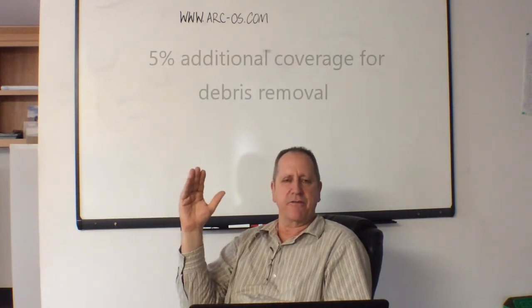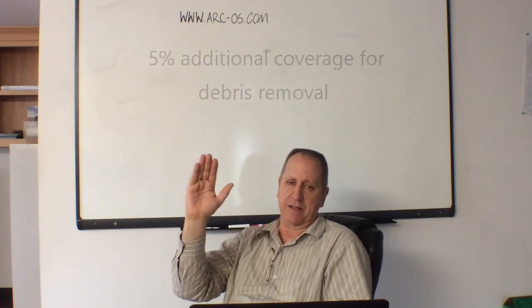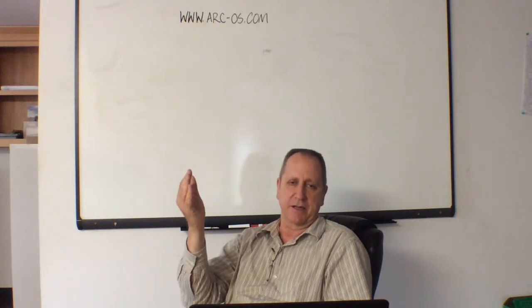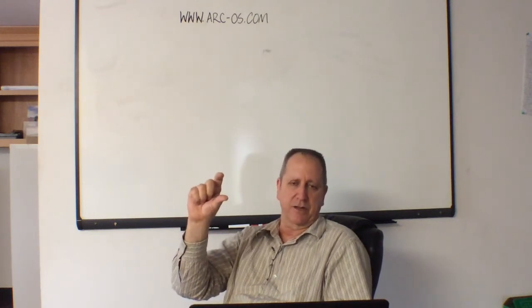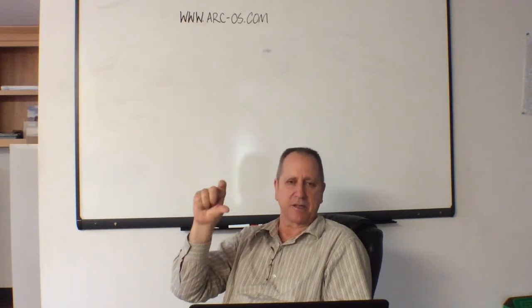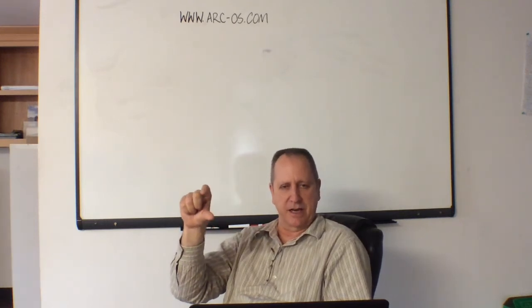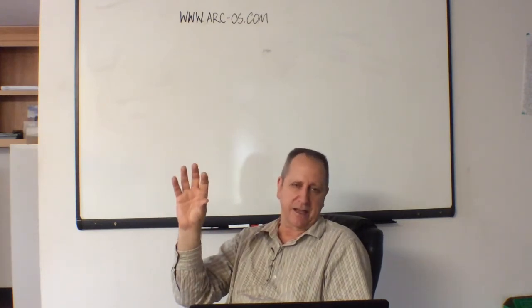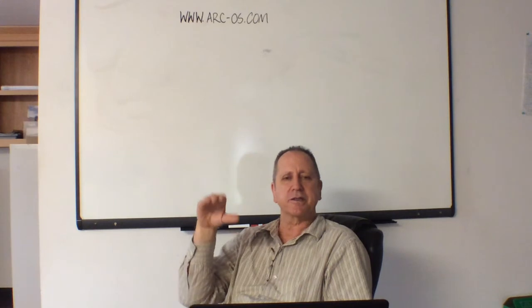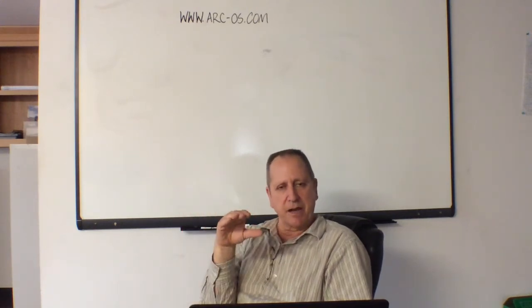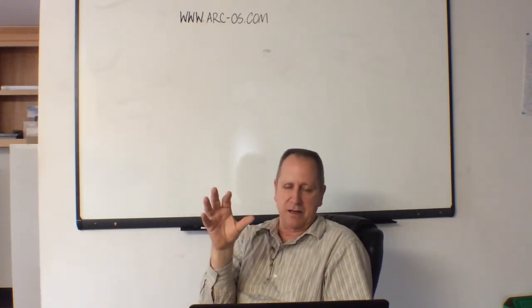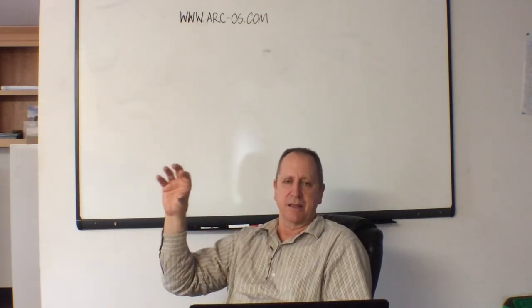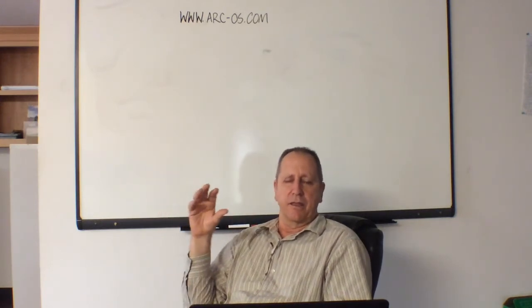Inside your insurance policy there are additional coverages available. For instance, there's an additional five percent for debris removal — so if your coverage is one hundred thousand dollars, that's five thousand dollars additional, or ten thousand dollars on two hundred thousand. You have to look inside your policy as every policy is different. There's also coverage for landscaping, usually a percentage of your Coverage A limit, and also sometimes a limit for an outbuilding.